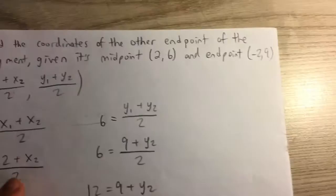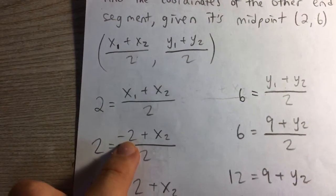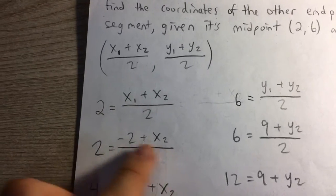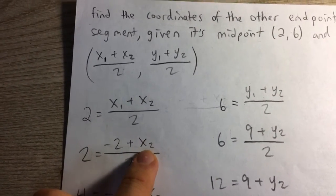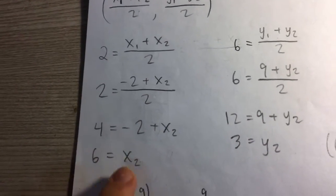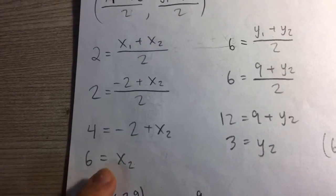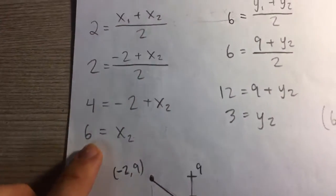And we also know one of the other coordinates. So if we take negative 2 of the endpoint and plug it in for one of our x1s, or you could do either one, I just chose x1, we can solve for the other x-coordinate. Multiply both sides by 2 and then add 2, and we see the other endpoint has an x-coordinate of 6.